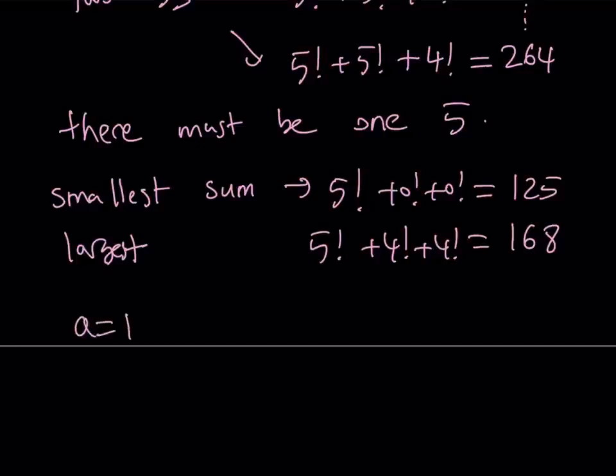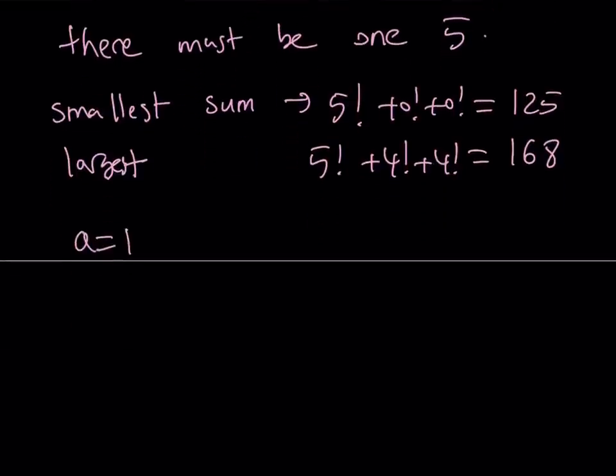Well, if A is equal to 1, then we have the following options. We can have 1 factorial plus 5 factorial plus 0 factorial. And since we have to have a 5, obviously, if A is 1, one of the digits B or C must be 5. And we have the third option for the C or B, whatever. This gives us 122.